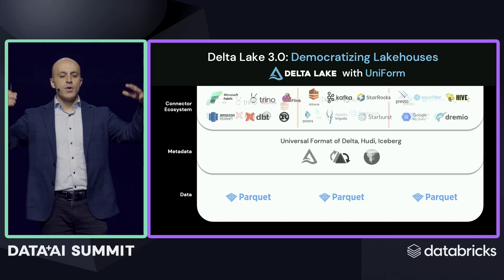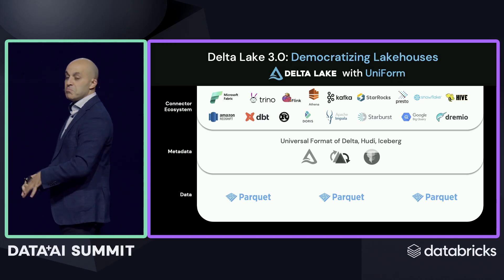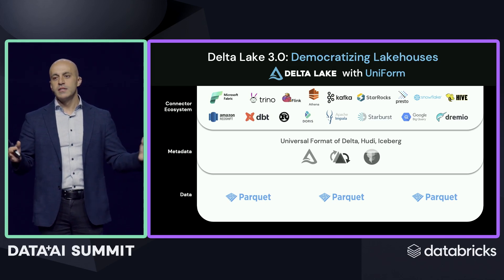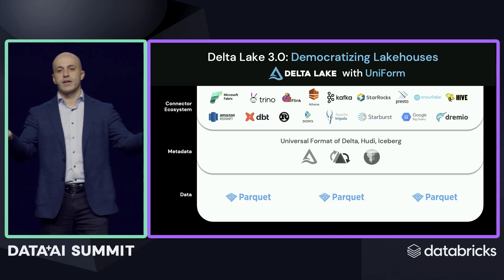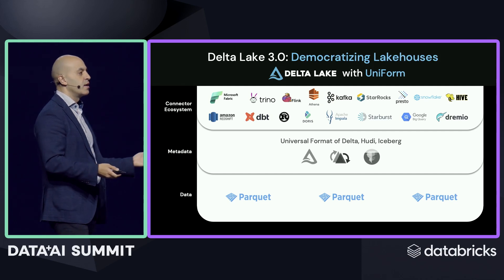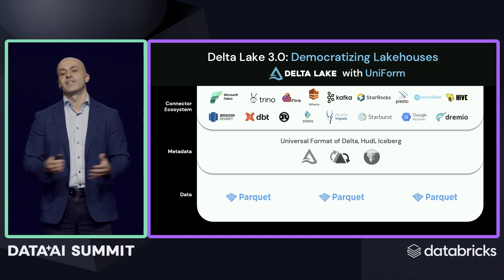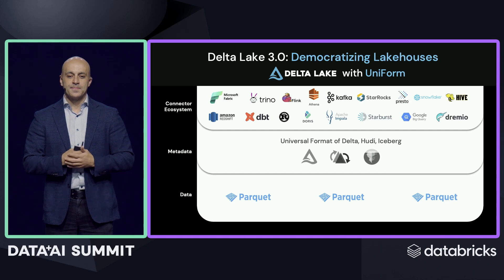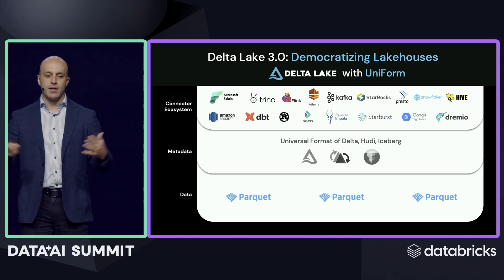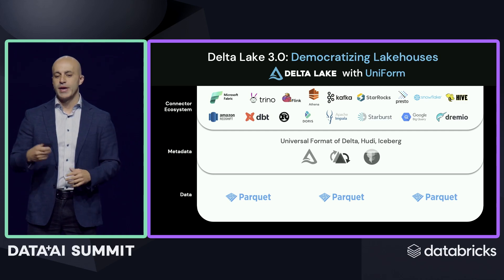What that means is that anyone accessing the connectors, readers, writers, and engines that access data in Delta — to them, it looks like it's Iceberg, or Hudi, or Delta. That way, you can actually eliminate this friction, these format wars that some would like us to have. We can just eliminate that and really democratize access to data in these lake houses. We think this is a really big step forward and will help the community move toward lake houses, so everyone can store their data and be able to do AI and all these things on it.